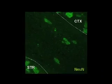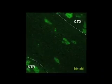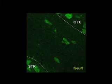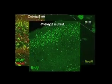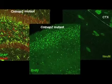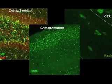Similar to the patients, we also found ectopic neurons in the corpus callosum. As you can see, the CNTNAP2 knockout mouse shows a disorganized brain structure.